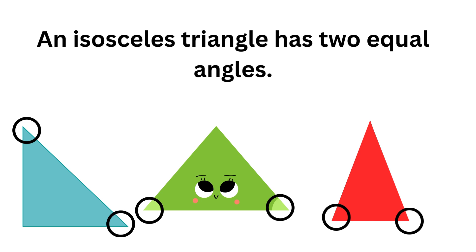Secondly, we have an isosceles triangle. An isosceles triangle will always have two equal angles. And again, on this slide we have three isosceles triangles, and the two angles that are equal I have circled. So just to remember, an isosceles triangle has two equal angles.